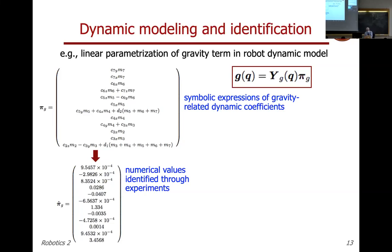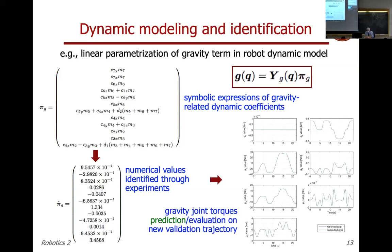In the validation, some new motion is performed and the retrieved g(q) — information that the KUKA controller provides only numerically — is compared to what we computed with our identified model. The plots are fully superposed: we correctly identified the parameters that the manufacturer knows but does not give to the user. We essentially did reverse engineering — asked for the parameters, were told no, found them ourselves, and published the identification matrix in a journal.